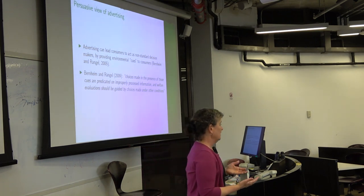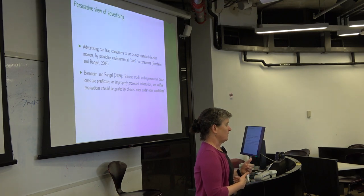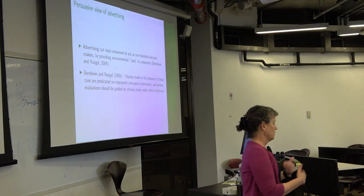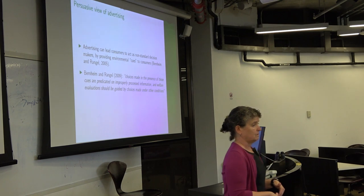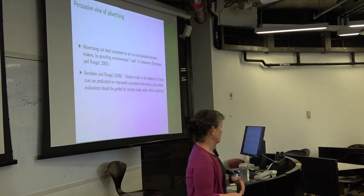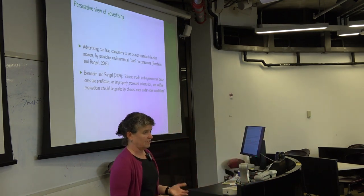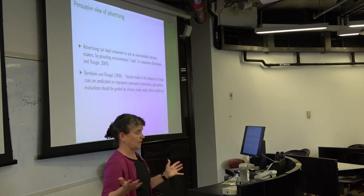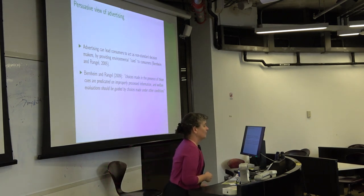I'm mainly going to think about the persuasive view: advertising leads consumers to act as non-standard decision-makers by providing environmental cues. Choices made in the presence of these cues are not your true preferences — they're predicated on improper information processing. The fact that you're distorted by thinking you'll be like Gary Lineker leads you to not pay attention to prices and negative health characteristics. When thinking about the government's objective function, we want to evaluate welfare based on true preferences, not distorted ones.